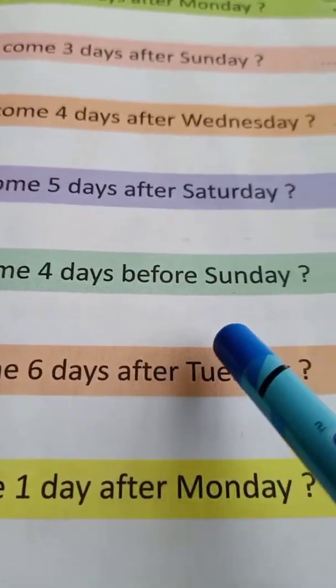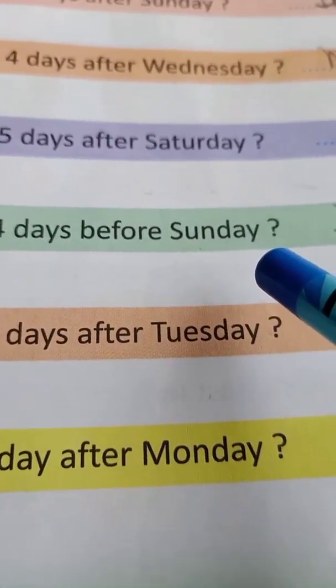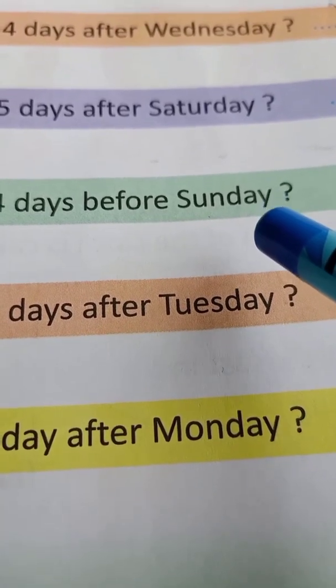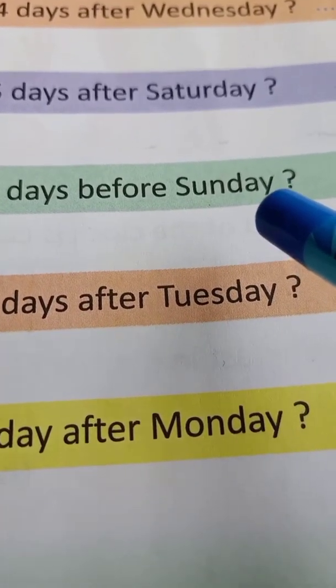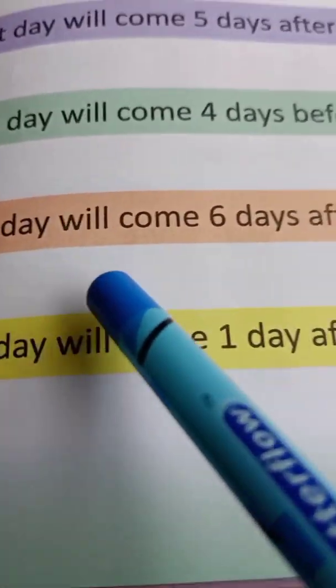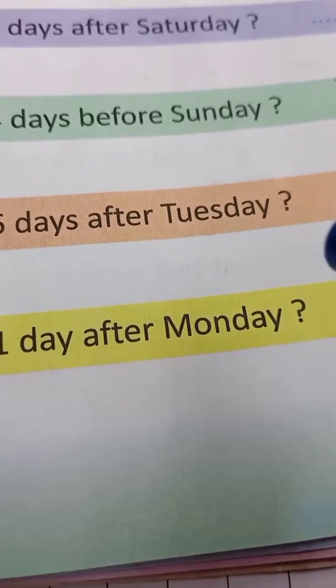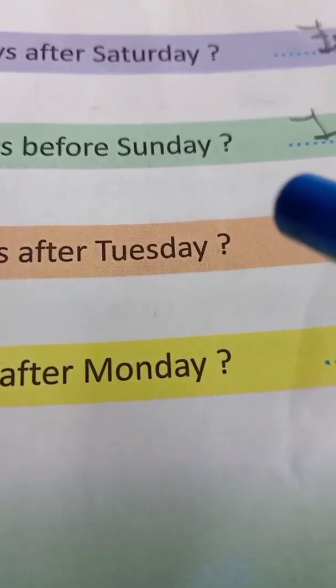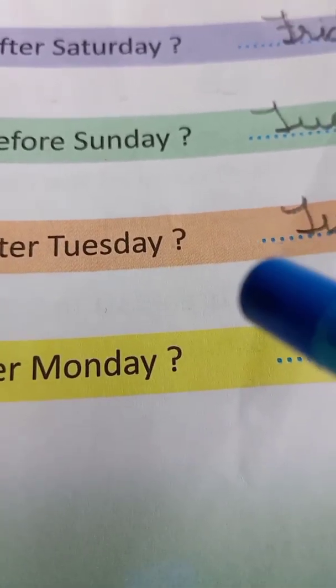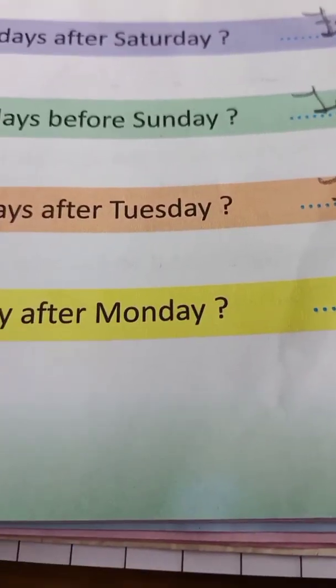What day will come four days before Sunday? Before Sunday, count four days: Saturday, Friday, Thursday, Wednesday — so Tuesday will come. What day will come six days after Tuesday? Count: Wednesday, Thursday, Friday, Saturday, Sunday, Monday — so Tuesday will come.